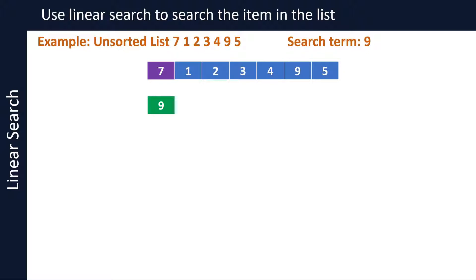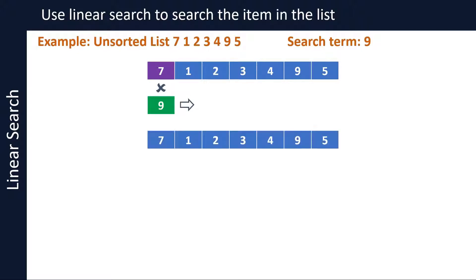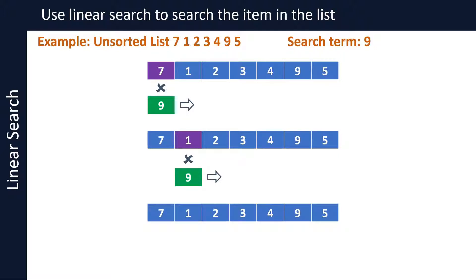Since 7 and 9 do not match, move on to the next item. Now compare the second item in the list, which is 1, with 9. Since 1 and 9 do not match, move to the next item. Keep doing this until we reach the sixth item in the list, which is 9. Compare the sixth item, 9, with the search term 9. Since they match, we have found our item in the list. Report that the item is found and exit the algorithm — no more comparisons are needed.